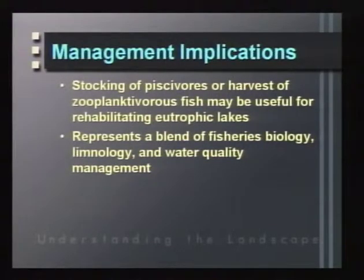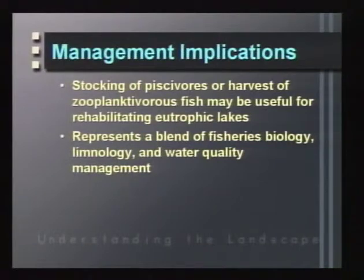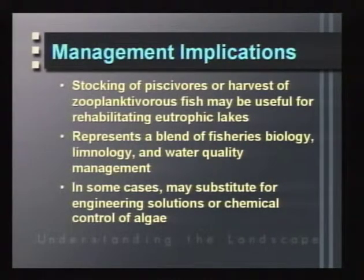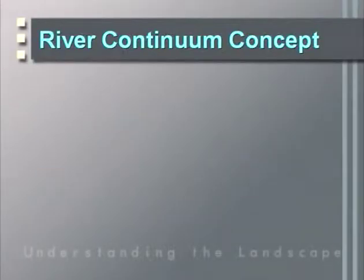Trophic cascading is an important management tool used in streams and lakes of the Midwest to manage trophic structure and productivity. It represents a blend of fisheries biology, limnology, and water quality management. In some cases, this type of biological management can substitute for engineering solutions to control excessive algal or phytoplankton growth.